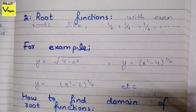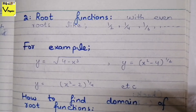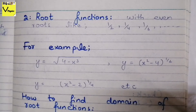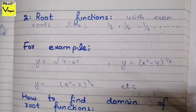Summary of the procedure for even-rooted functions: First, set the term inside the root equal to zero and find the values of x. From those values, generate intervals from the set of real numbers. Then check some values lying in each interval by substituting into the original function. The interval that makes the function complex — remove it. The interval that gives real results — include it in the domain.